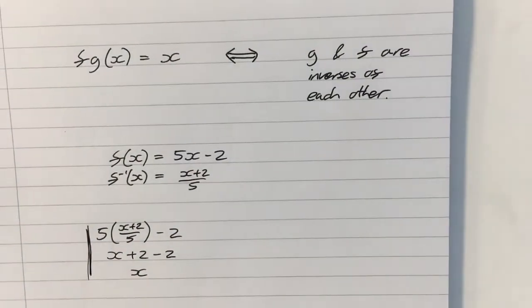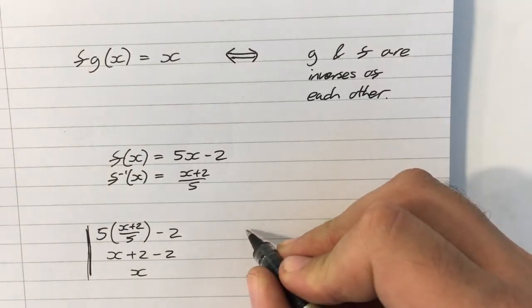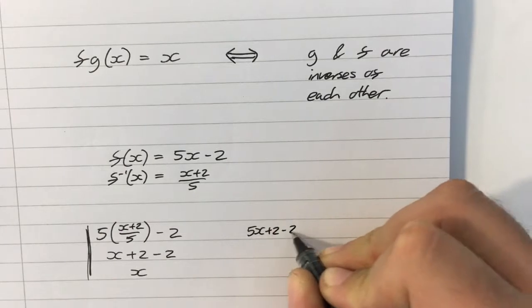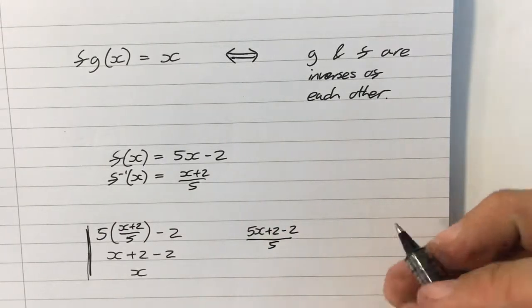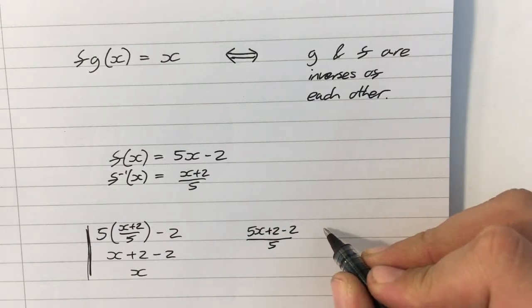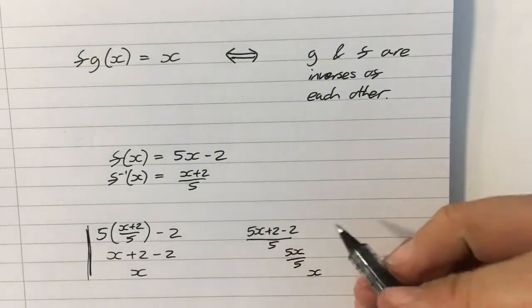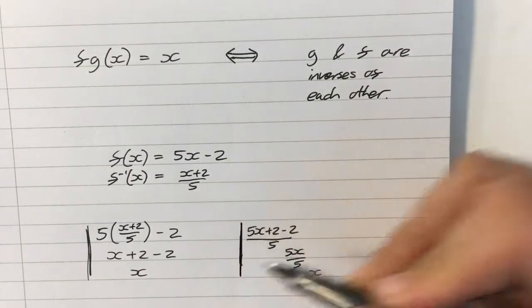Okay, that's doing f composite f to the minus 1. Other way around, I could do 5x plus 2 subtract 2 over 5. I'll end up with 5x over 5, which leaves me with x. So again, I'm left with x.